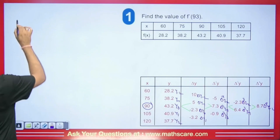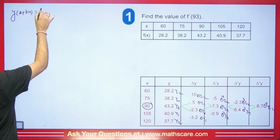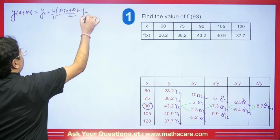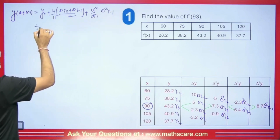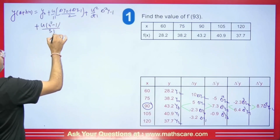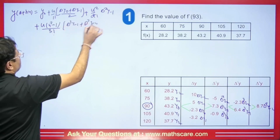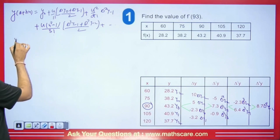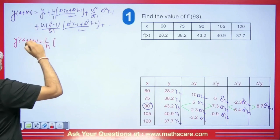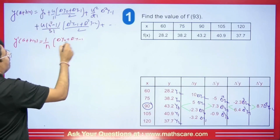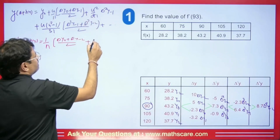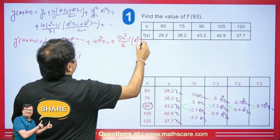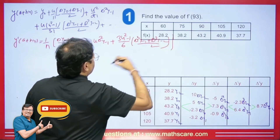We write the Sterling derivative formula: Y'(A + HU) = (1/H)·[(ΔY₀ + ΔY₋₁)/2 + U·Δ²Y₋₁ + (3U²−1)/6·(Δ³Y₋₁ + Δ³Y₋₂)/2 + ...]. Now we determine U: A + HU = 93, with A = 90 and H = 15. So 90 + 15U = 93, giving 15U = 3, so U = 3/15 = 1/5 = 0.2.